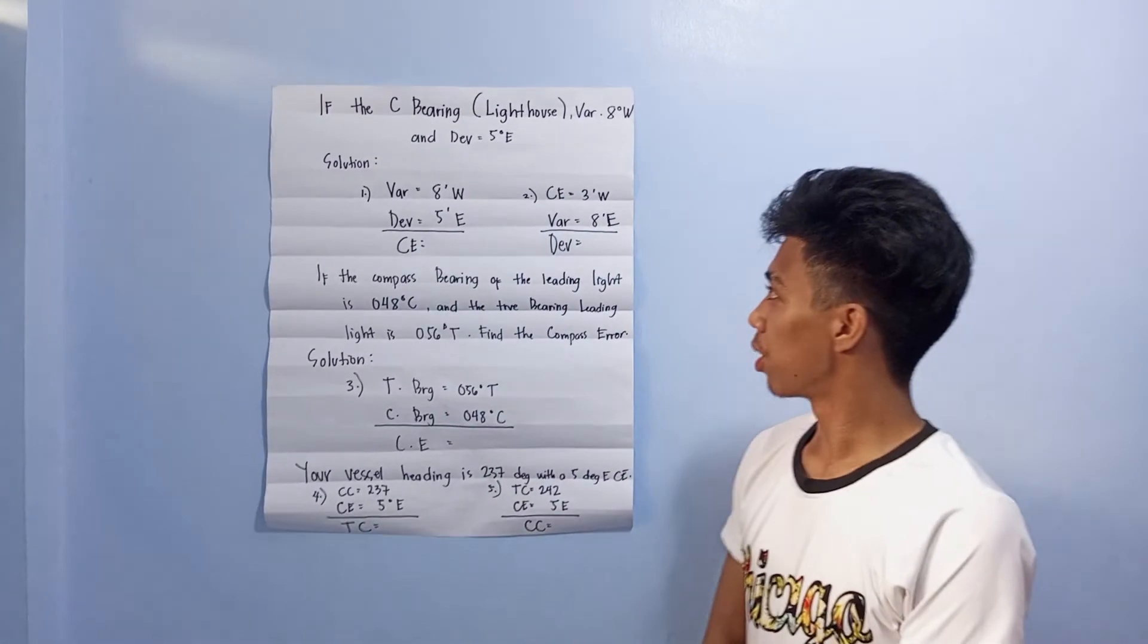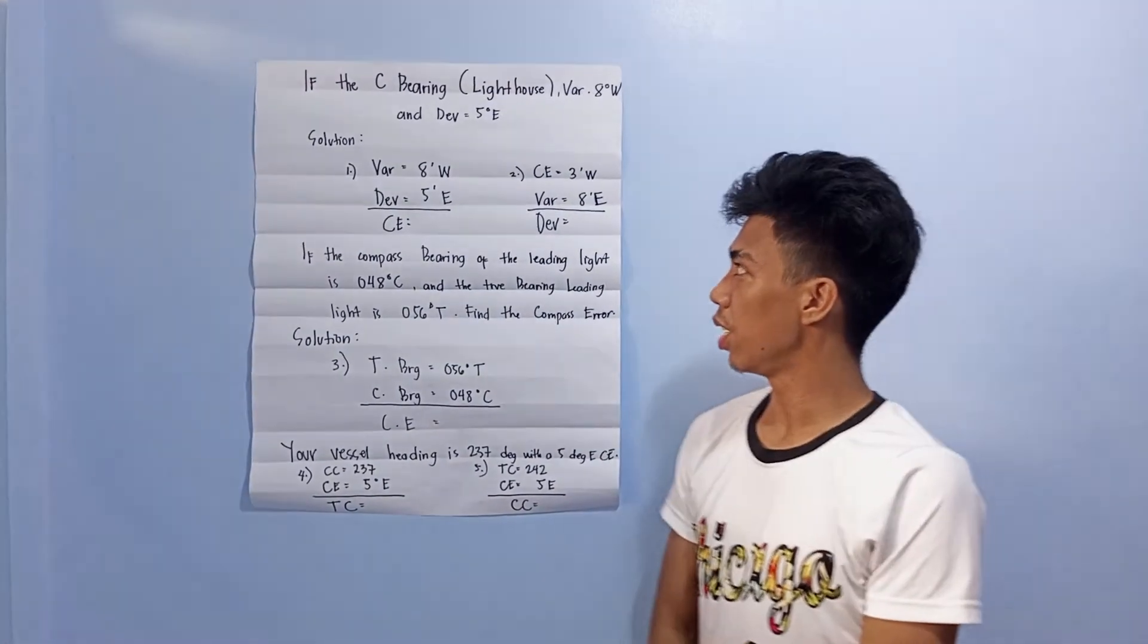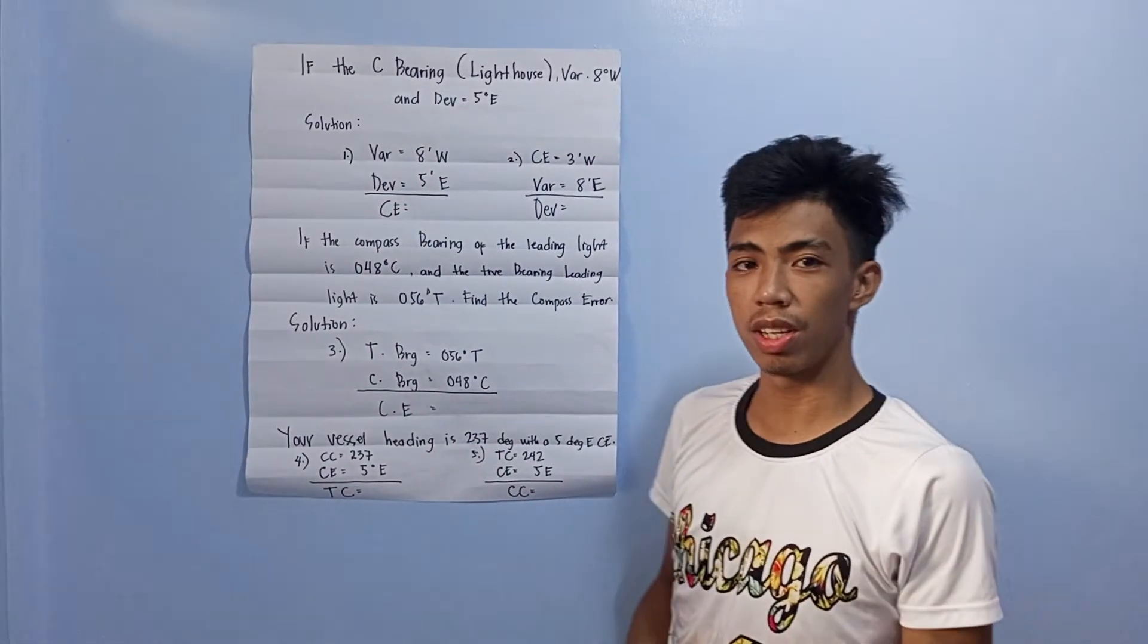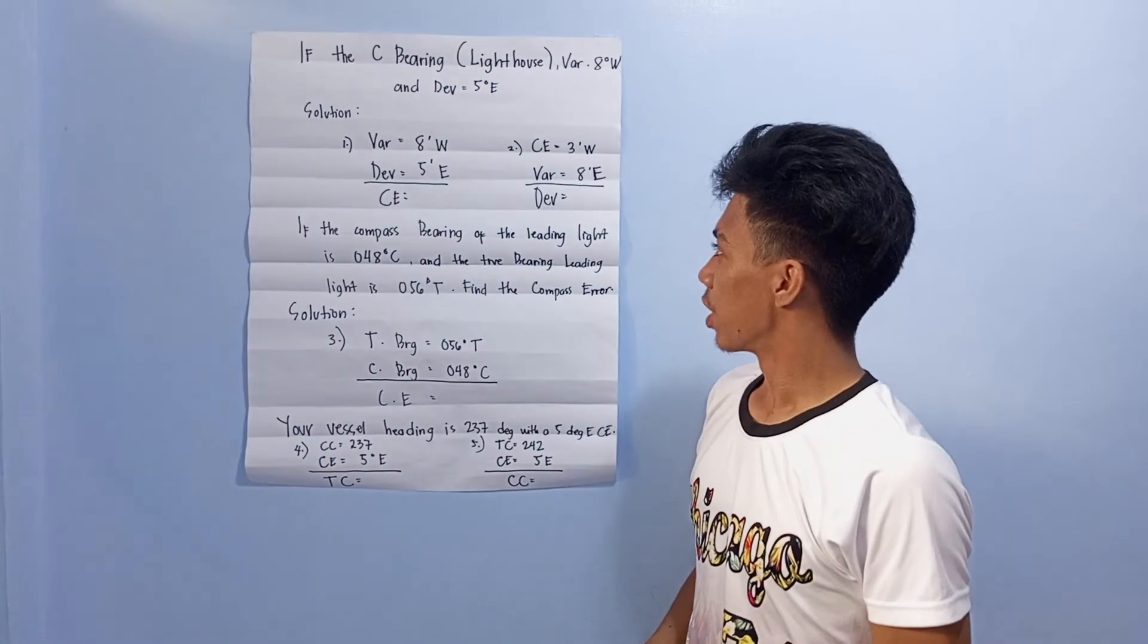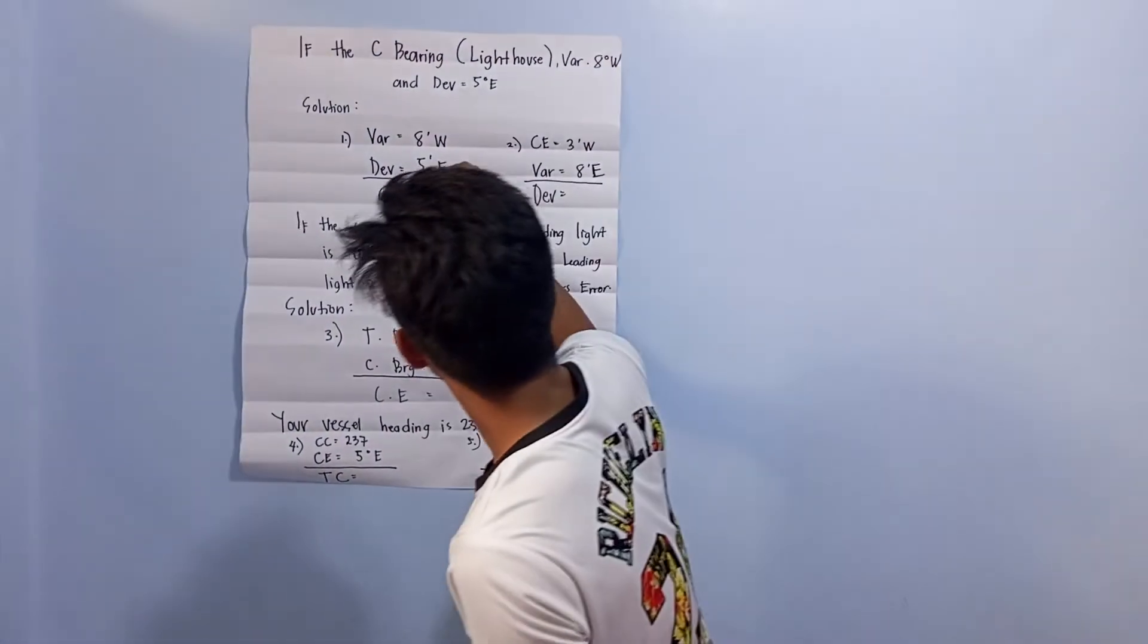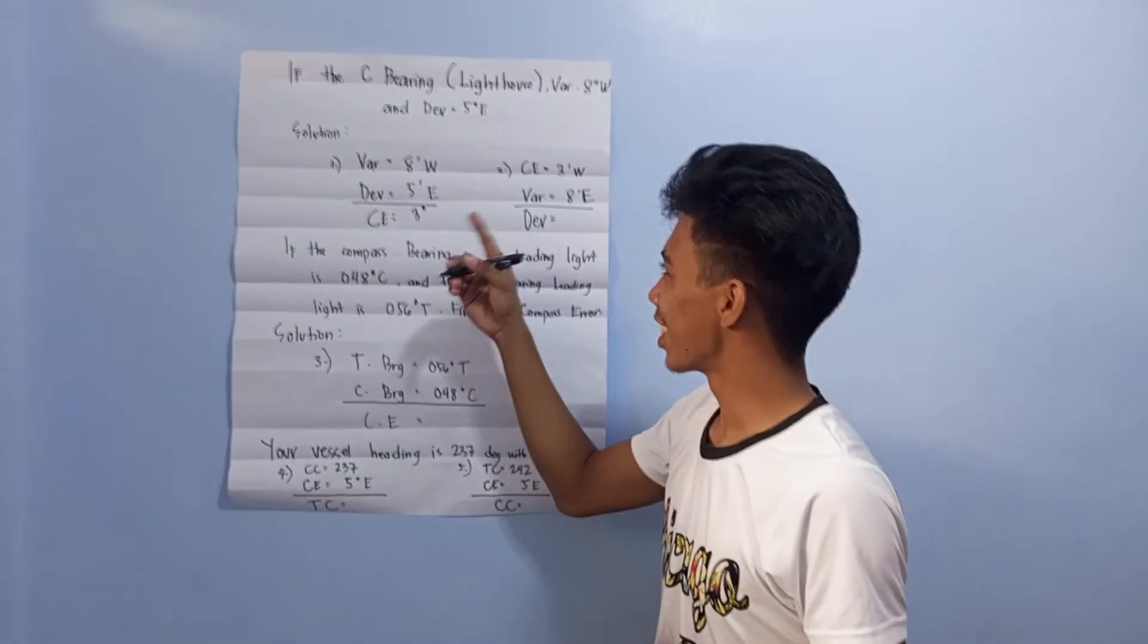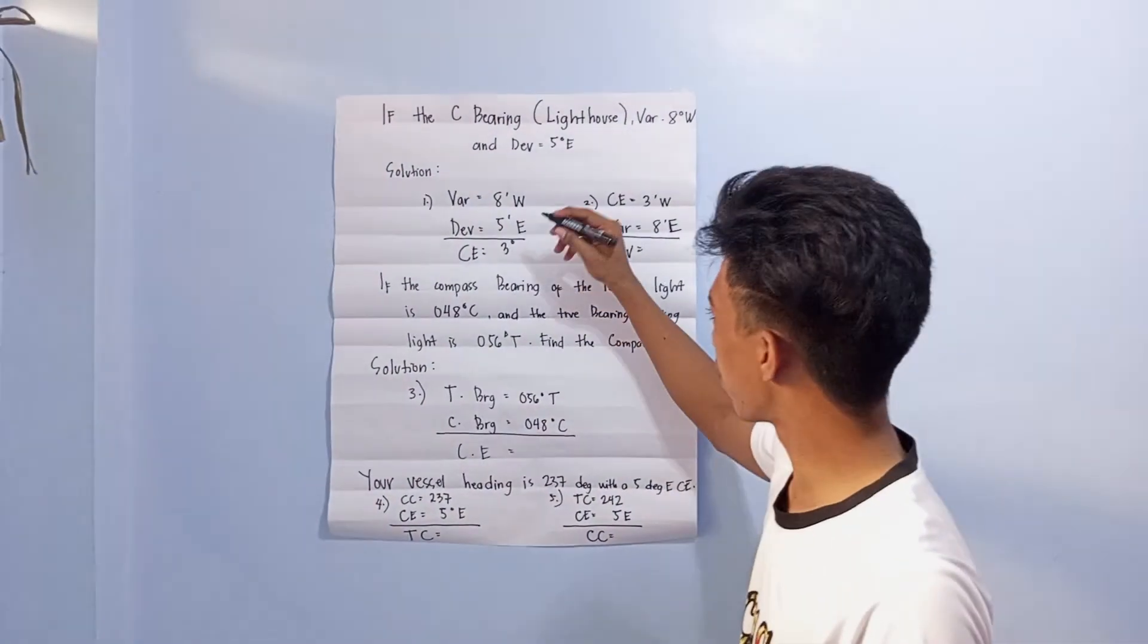First question: find the compass error. The given is variation and division. Since they are different signs, we subtract. The answer is three degrees west. We copy the bigger sign and bring down the higher amount.